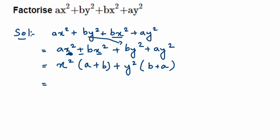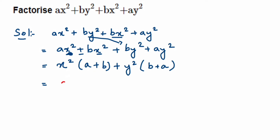We now have two terms: x²(a + b) and y²(a + b). In these two terms, (a + b) is again common. Taking (a + b) outside as a common factor: from the first term x² is left, and from the second term y² is left. So we get (a + b)(x² + y²).